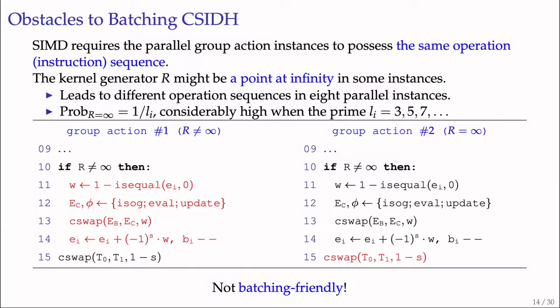However, this is not enough for batching. We conceive our batched software where eight OAYT-style group action instances are computed simultaneously by AVX-512 instructions. Each instance is computed in 64-bit limbs and instances are independent. The problem is SIMD requires parallel instances to possess the same operation sequence, which is a stricter requirement than constant running time.